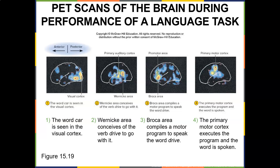Here's a PET scan of the brain during a language task. When you hear the word 'car,' it's actually seen in the visual cortex first — your brain automatically visualizes what a car is. Then the Wernicke area conceives of the verb 'drive' to go with it. The Broca area compiles a motor program to speak the word 'drive,' and then the primary motor cortex executes the program and the word is spoken.